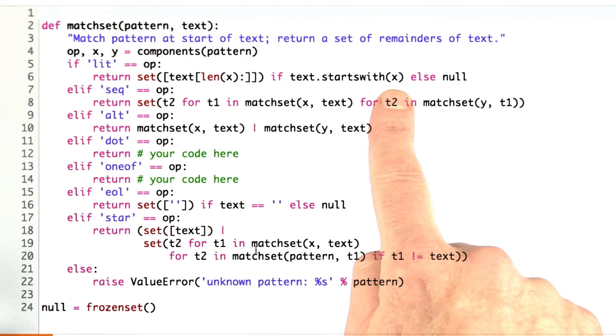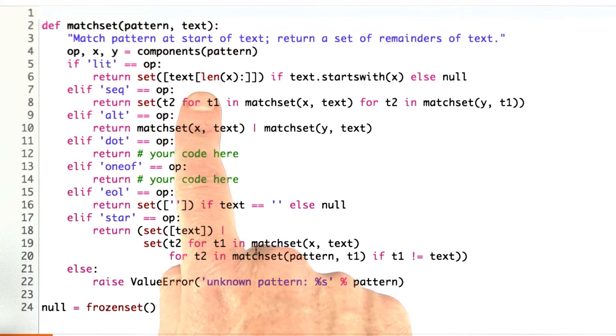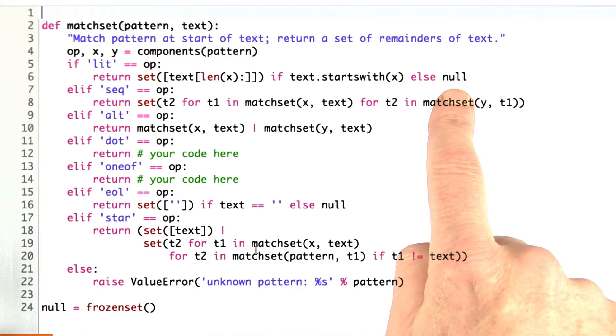If we've matched a three-character sequence for x, we return the text without the first three characters. If x was one character, we return the text without the first character. Otherwise, we return the null set. There's no match.